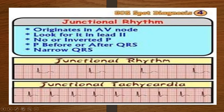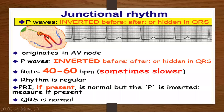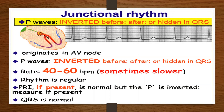Junctional rhythms originate in the AV node. Your rate with junctional rhythms is going to be between 40 and 60 or slower. The rhythm is usually regular and your QRS is usually normal.